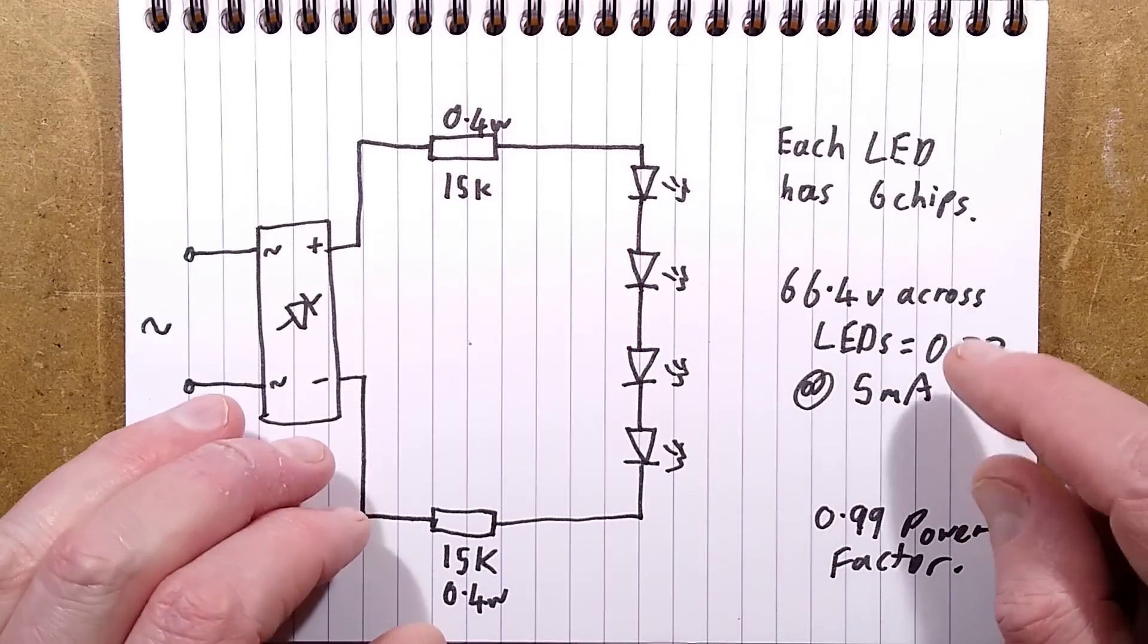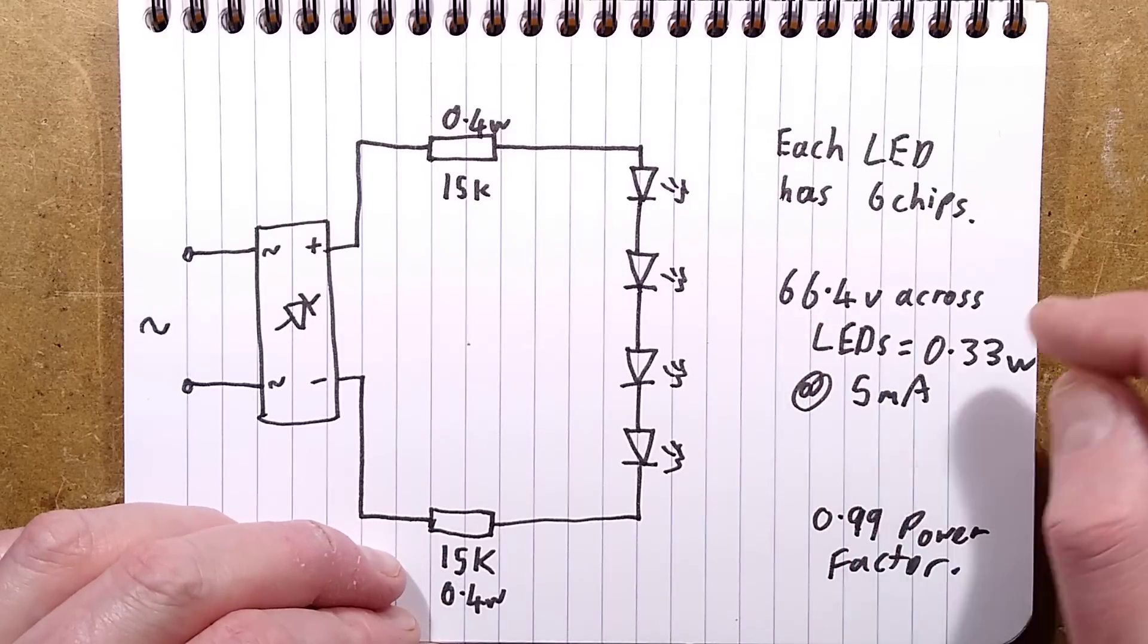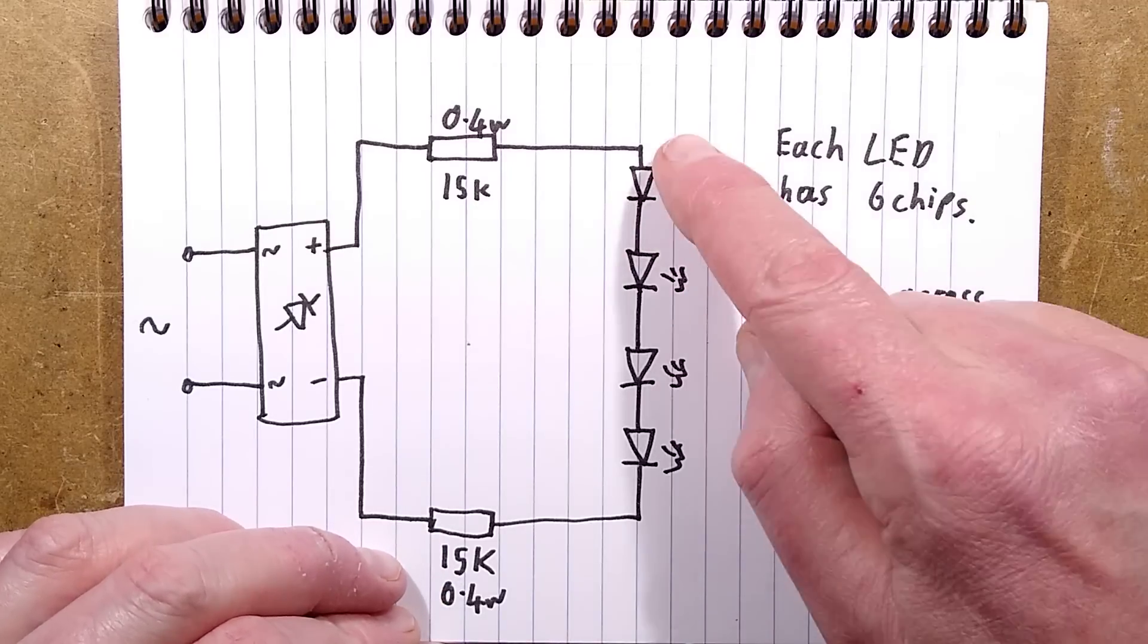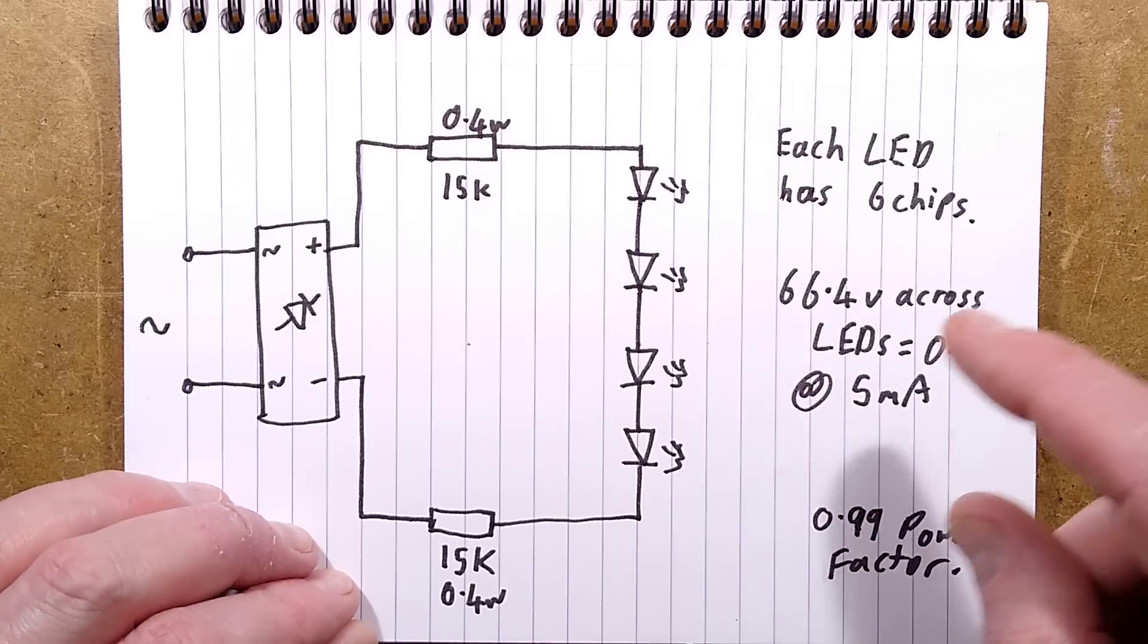So the six LEDs per package for a total of 24 LEDs gives about 66.4 volts across all the LEDs. They are dissipating about 0.33 watts at the 5 milliamp current that's flowing through the circuit.